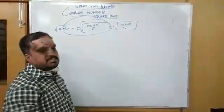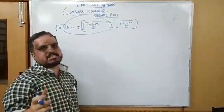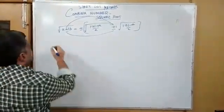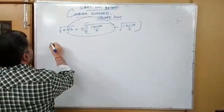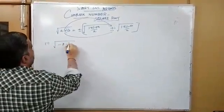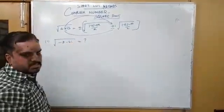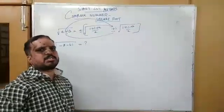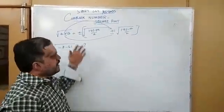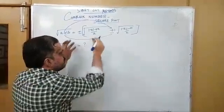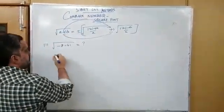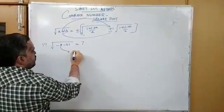First, I take one question: find the square root of minus 8 minus 6i. Here, a is equal to minus 8, and b is equal to minus 6.